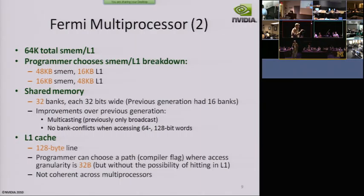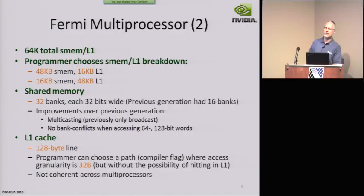Another question from Michigan: Is the L1 cache shared between thread blocks that are running on the same SM? Yes. The L1 cache is just mirroring the global addresses, so it is shared. That's why you have to synchronize accesses so that you can make sure that all the threads in the block get to the same place, if you actually want to share data.